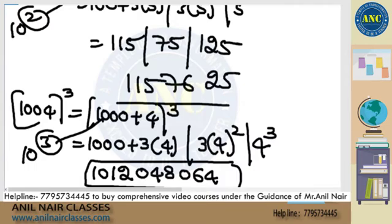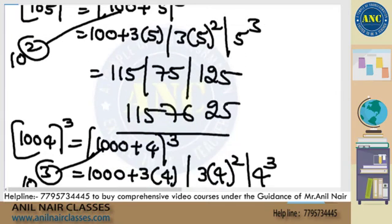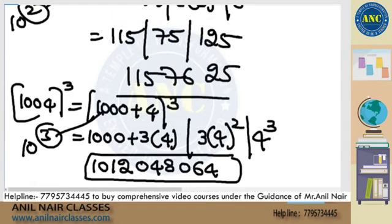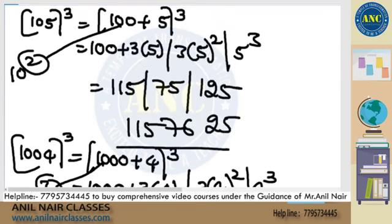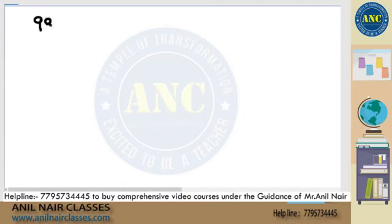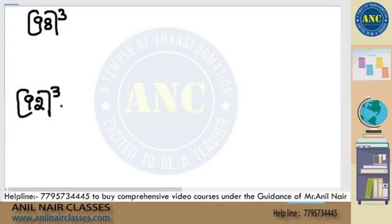We took the numbers greater than 10 power k. We will also take the numbers less than 10 power k. It is all about concepts. Suppose if it is less than 10 power k, we will start with 98 cube.